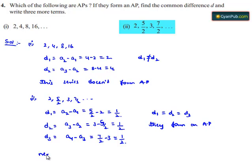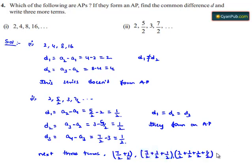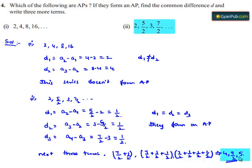The next three terms are obtained by adding the common difference to the preceding term. So 7/2 plus 1/2 equals 8/2, which is 4. The next term is 4 plus 1/2 equals 9/2. And the term after that is 9/2 plus 1/2 equals 5. Therefore, the next three terms are 4, 9/2, and 5.